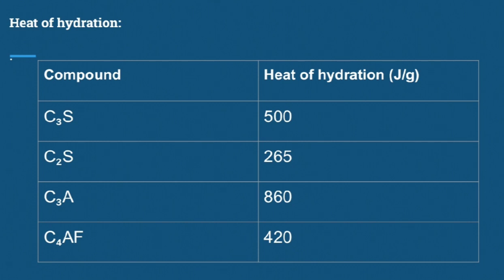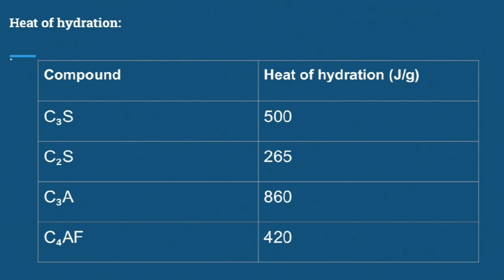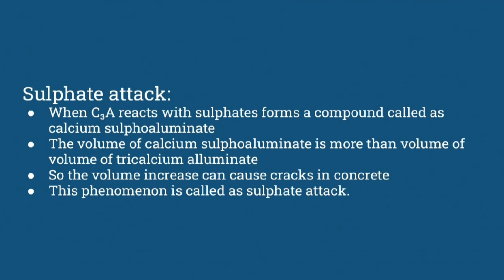For different compounds, heat of hydration is different. For C3S, tricalcium silicate, the heat of hydration is 500 Joules per gram. For C2S, it is 265 Joules per gram. For C3A, it is 860 Joules per gram. And for C4AF, it is 420 Joules per gram. The highest is for C3A at 860 Joules per gram, so the C3A content should be less for mass concreting, so that heat of hydration is minimized.